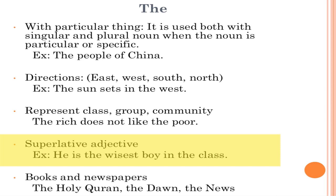Rule number four: superlatives. When we compare one thing or one person with the whole class, whole society, or the whole world, we use superlatives. Superlatives always take 'the'. For example, 'he is the best in the whole class' or 'the best in the whole world'.